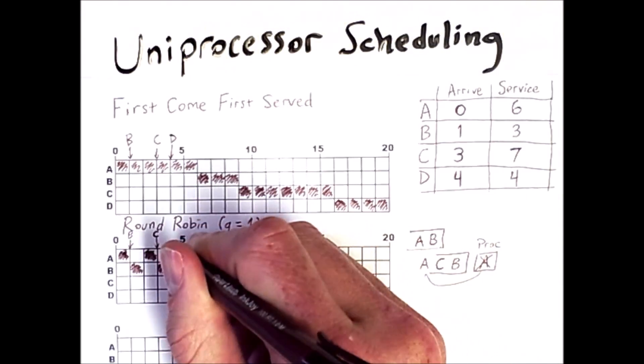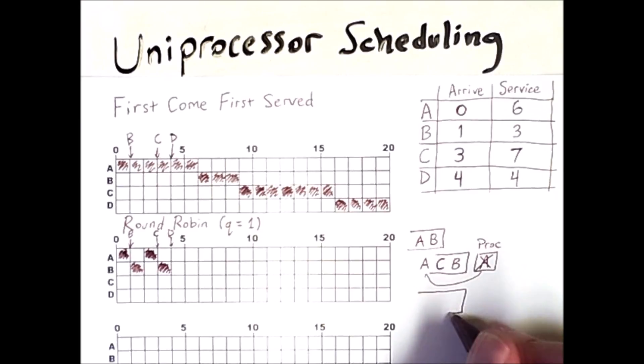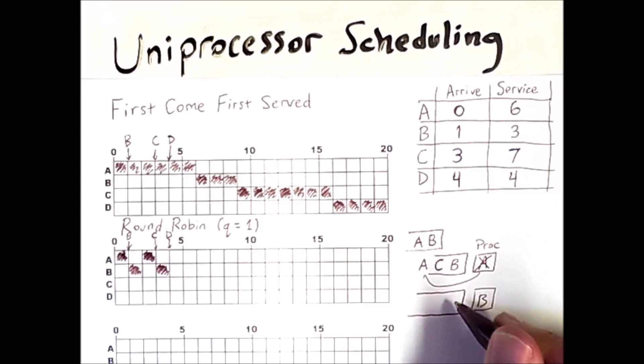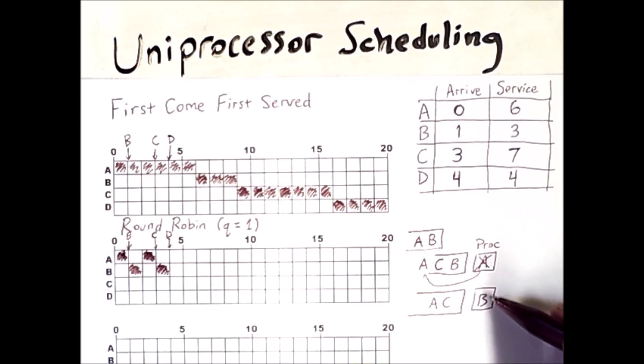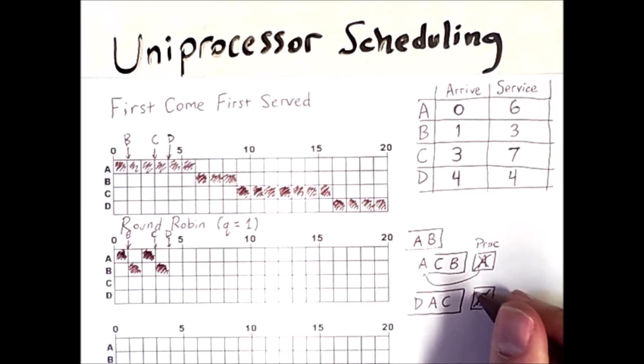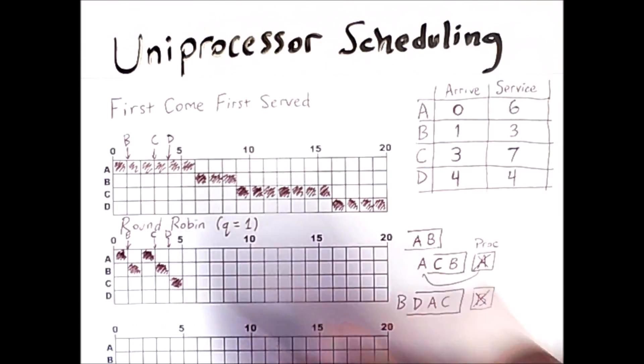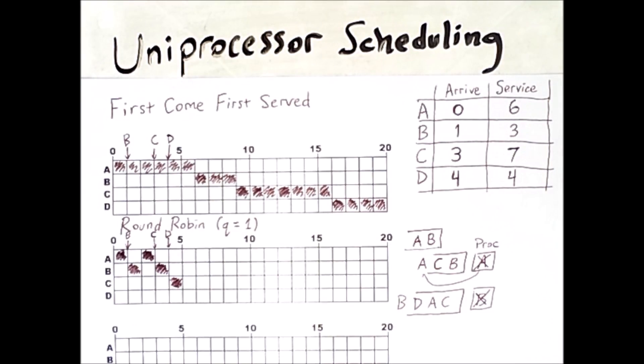And then here at time four, D shows up. We had B on the processor and C and A were behind it. And while B was still running, D showed up and then B finished its quantum. And so the next process that runs is C. And from this point onward, no new processes are arriving. So we can sort of just maintain this queue order. However, we will have to watch carefully for when the individual processes complete their service time.